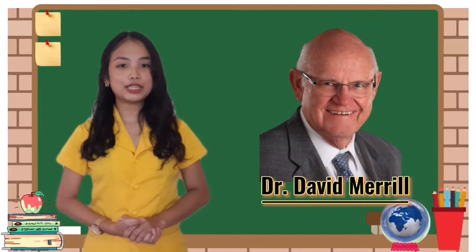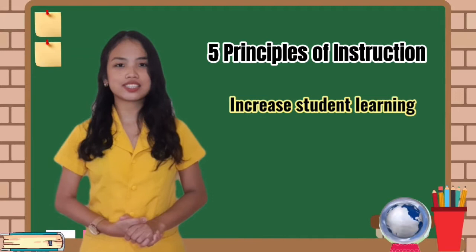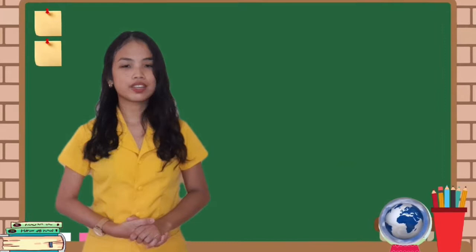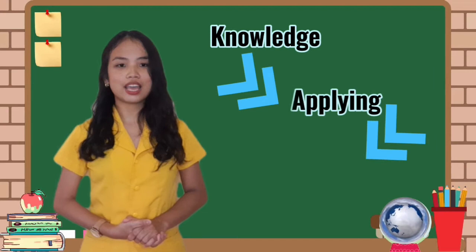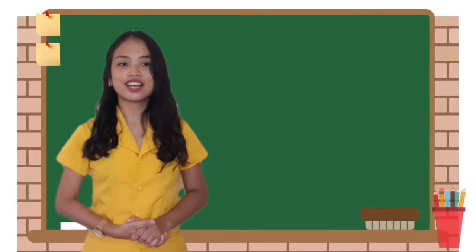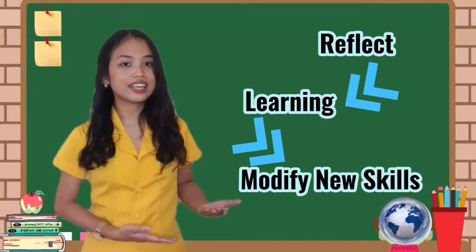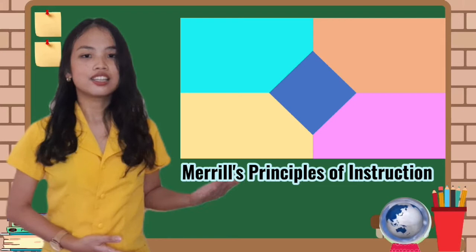David Merrill is the person behind Merrill's Principles of Instruction. He created five principles of instruction to assist educators to increase students' learning. As he believes, we should show students what we are trying to teach them instead of just telling them. The highlight of this model is to provide opportunities for learners to use new knowledge and skills by applying them to a task or problem. Students reflect and discuss what they have learned to revise, recombine, and modify their new knowledge.